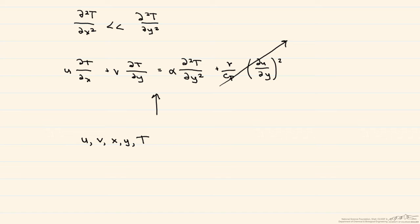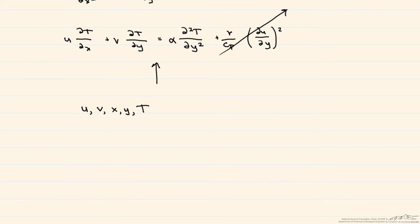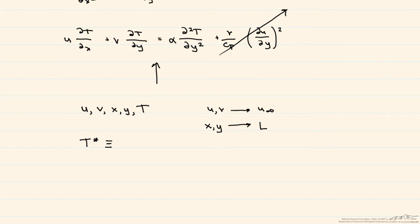The way we non-dimensionalize or normalize these variables is to use a characteristic velocity, a characteristic length, or some kind of temperature expression to make them non-dimensional. For both u and v, we divide by the free-stream velocity. For x and y, we divide by the characteristic length — in this case, the length of the plate. The non-dimensional temperature T* is defined as T* = (T − T_s) / (T_∞ − T_s).